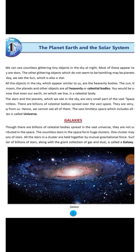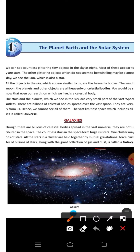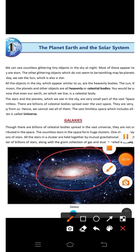All the stars in a cluster are held together by mutual gravitational force — you will study more about gravitational force in science. Such a huge cluster of billions of stars, along with a giant collection of gas and dust, is called a galaxy. This photo you are seeing — this is a galaxy. It contains billions of stars, giant gases, and dust. This is known as a galaxy.